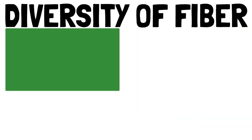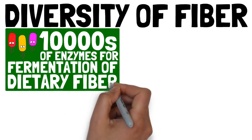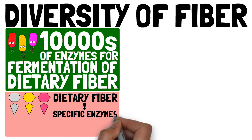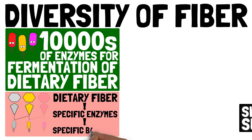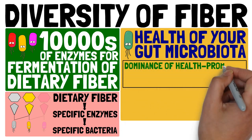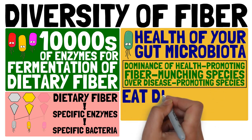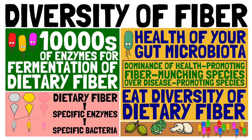Our gut bacteria provide tens of thousands of enzymes for the fermentation of dietary fiber, and each type of dietary fiber requires its own set of enzymes. Thus, a specific plant food will foster the growth of a specific small set of gut bacteria. The health of your gut microbiota — meaning the dominance of health-promoting, fiber-munching species over disease-promoting species — requires you to eat a large diversity of dietary fiber. The larger the diversity in plants you eat, the more fiber-munching bacteria species can grow, support each other, and keep you and your gut healthy.